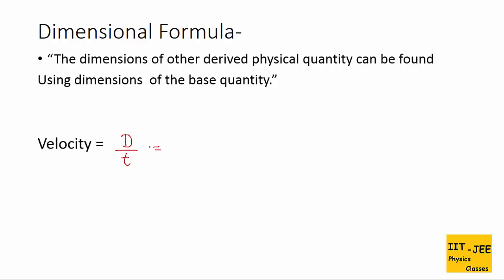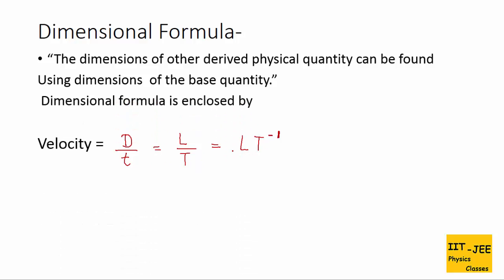Displacement is a length, so we use dimension L. T is time, so it is capital T. When T goes to the denominator, its power becomes negative, giving L T⁻¹. This L T⁻¹ is the dimension of velocity. When enclosed in square brackets, it becomes the dimensional formula of velocity.